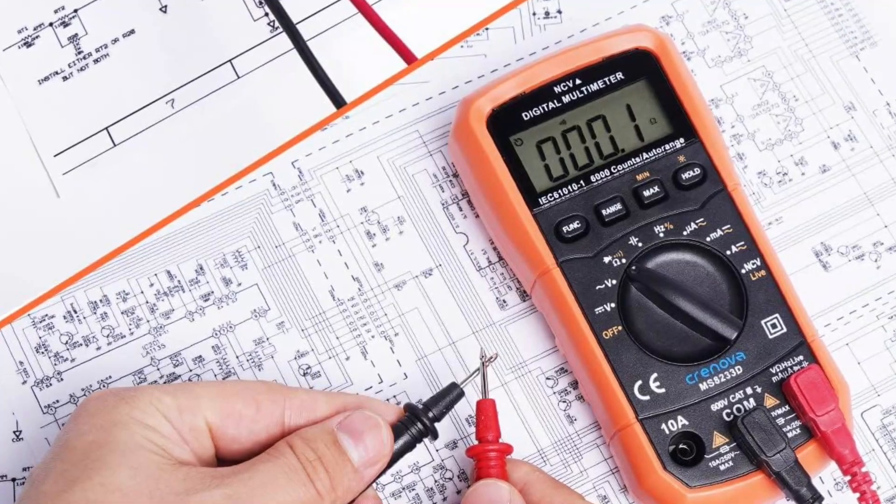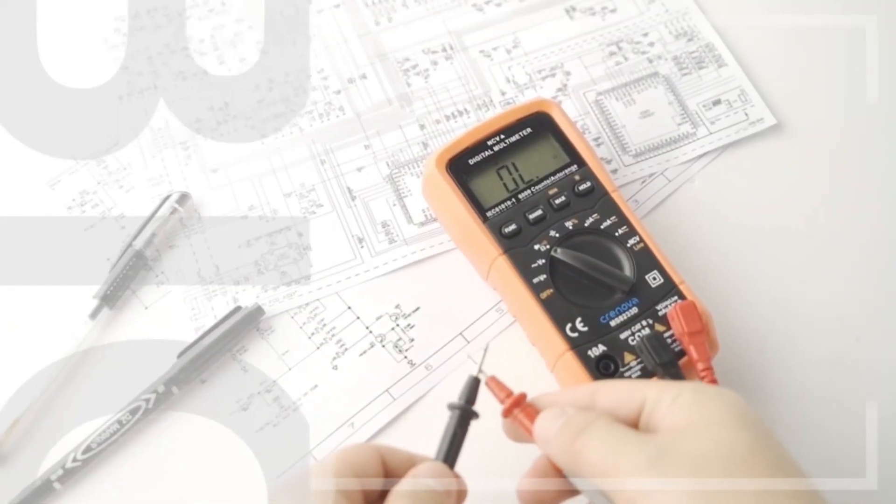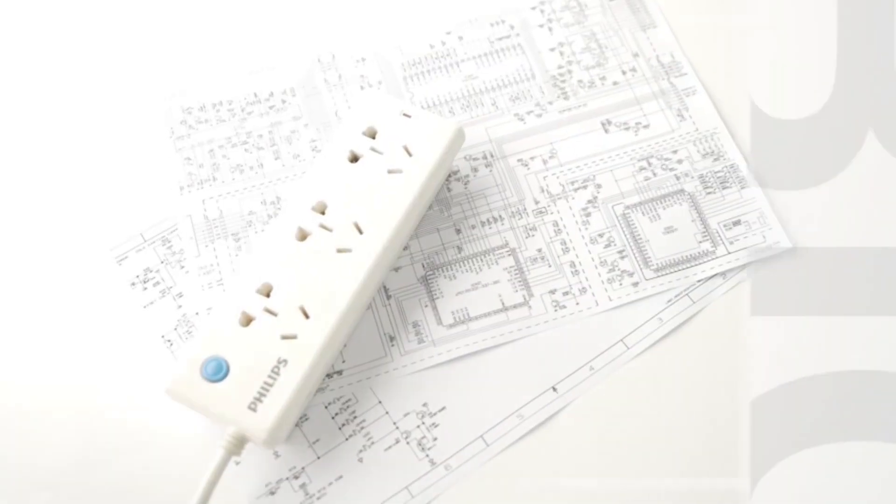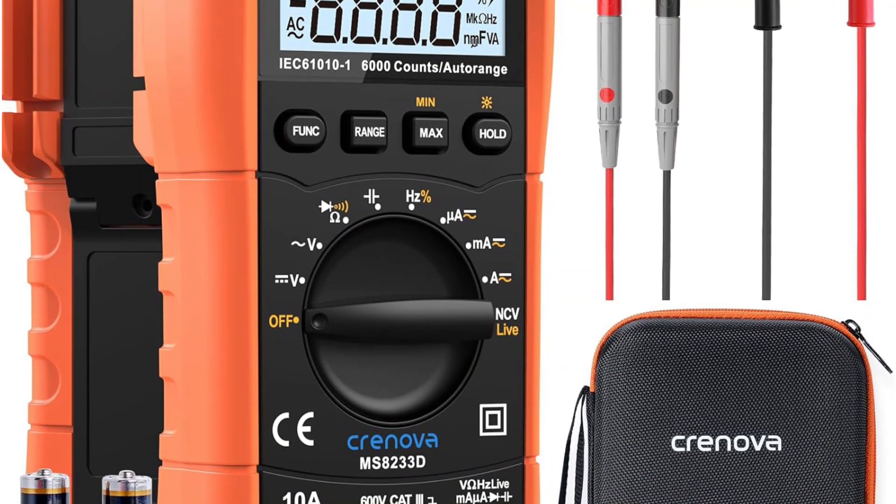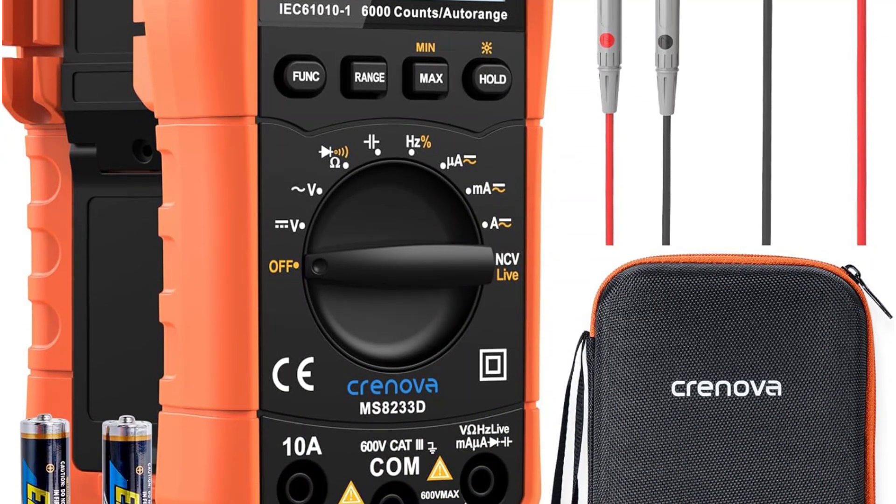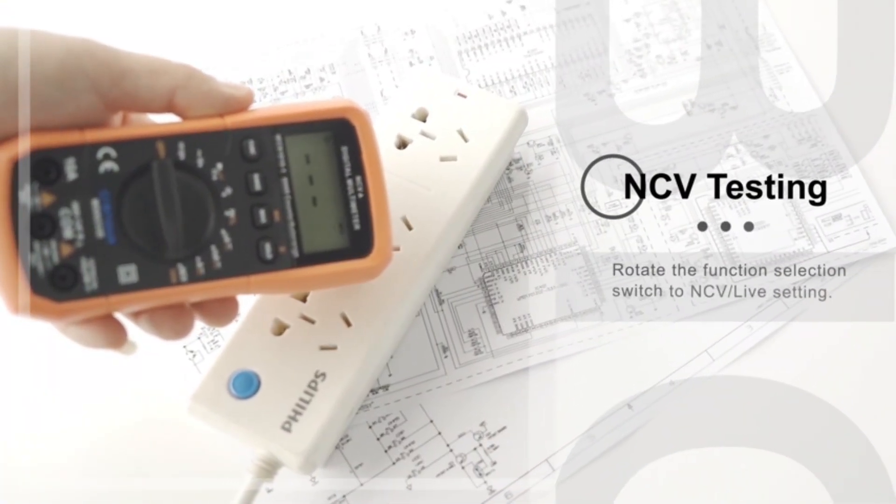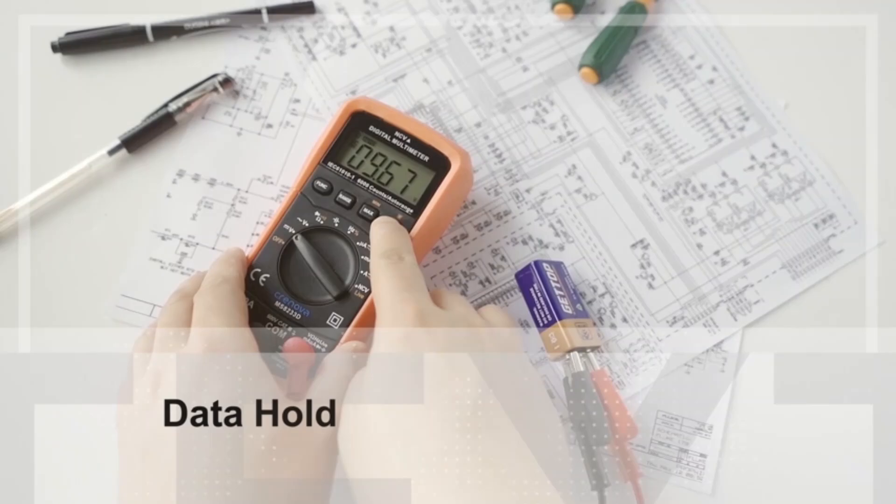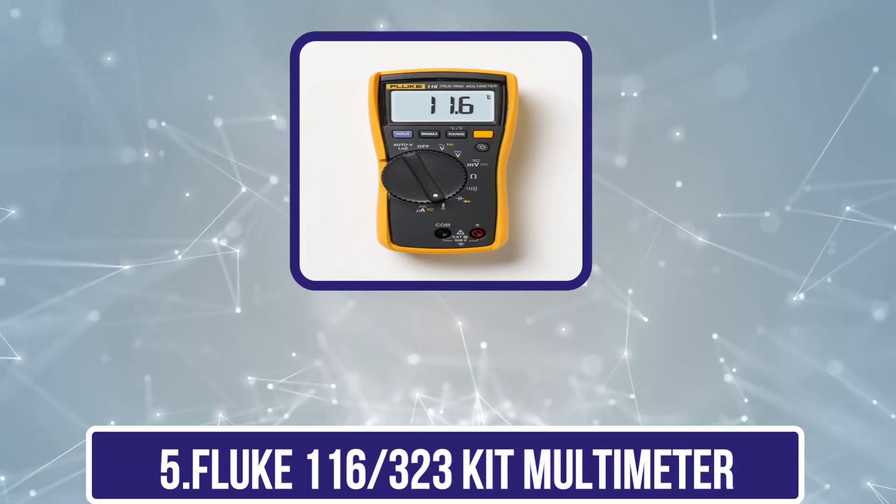Although not as precise as high-end models, it offers reliable accuracy for general electrical troubleshooting and maintenance tasks. The Cronova MS-8230 3D Auto Ranging Multimeter is an excellent choice for those seeking a balance between affordability and functionality. Its user-friendly design, combined with dependable performance, makes it a valuable tool for both professionals and DIYers needing a reliable multimeter for everyday electrical tasks.